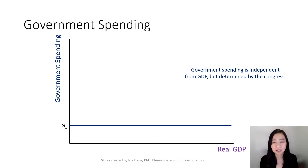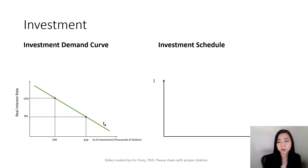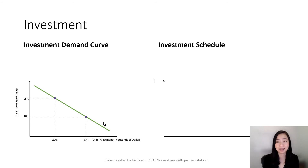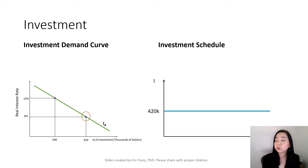First of all, government spending is independent from GDP because government spending is determined by our Congress. Investment is also independent from GDP because investment is determined by our real interest rate. We talked about the investment demand curve earlier. So once your real interest rate is determined, say 8%, then firms are going to decide that given that real interest rate is 8%, this is the amount of my investment demand, say 420,000. And once the firms determine that they are going to invest 420,000, then that is determined. So you can see that investment is not determined by real GDP.